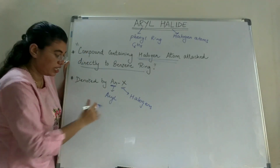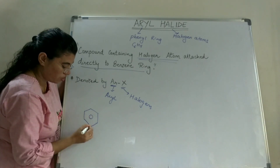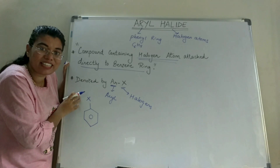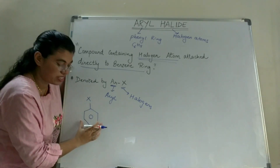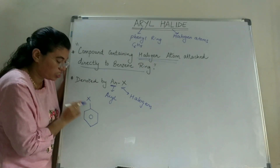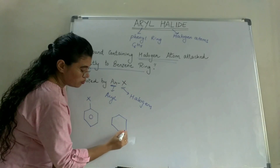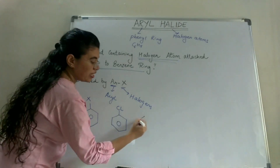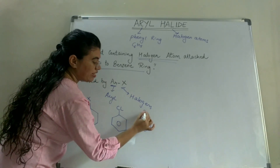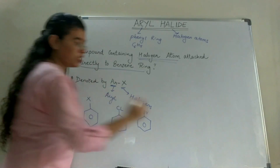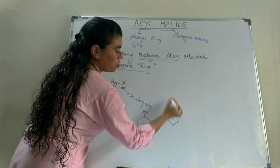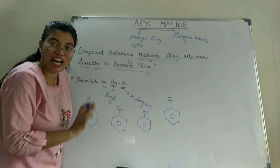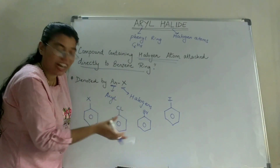Now let's take a few examples of Aryl Halide. Take a benzene ring and directly attach a halogen atom X — X can be any halogen atom. For example, if I attach chlorine (Cl) to a benzene ring, this becomes chlorobenzene. Next, if bromine is attached, it becomes bromobenzene. And if iodine is attached to a benzene ring, it becomes iodobenzene. These are examples of Aryl Halide, in which halogen atoms are directly attached to the benzene ring.